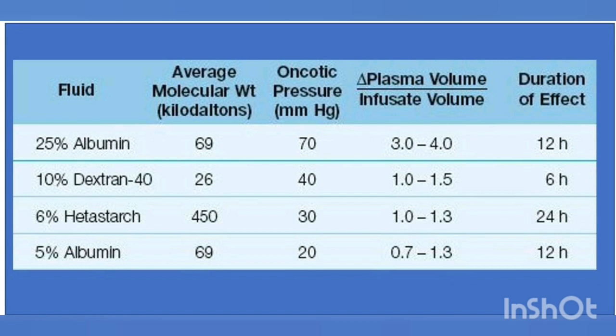The two most common dextran preparations are 10% dextran 40 and 6% dextran 70, each using 0.9% sodium chloride as a diluent. Both preparations have a colloid osmotic pressure of 40 mmHg and cause a greater increase in plasma volume than either 5% albumin or 6% hetastarch. Dextran 70 may be preferred because its duration of action — about 12 hours — is longer than that of dextran 40, which has a duration of about 6 hours.